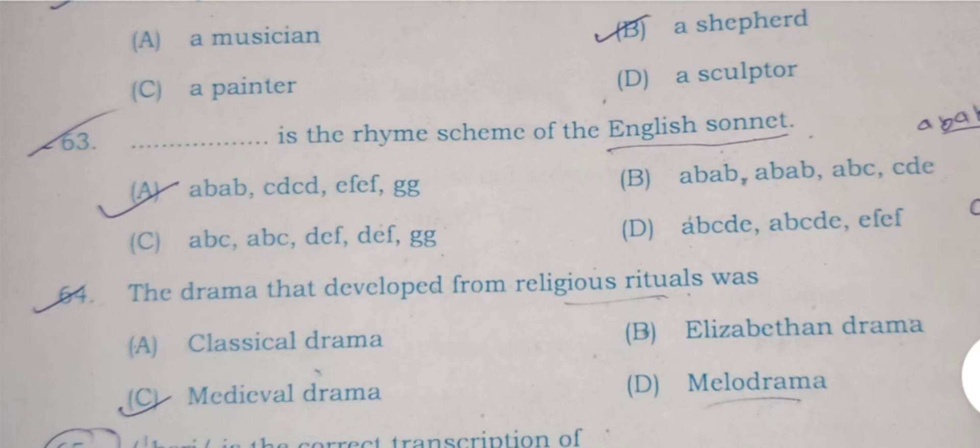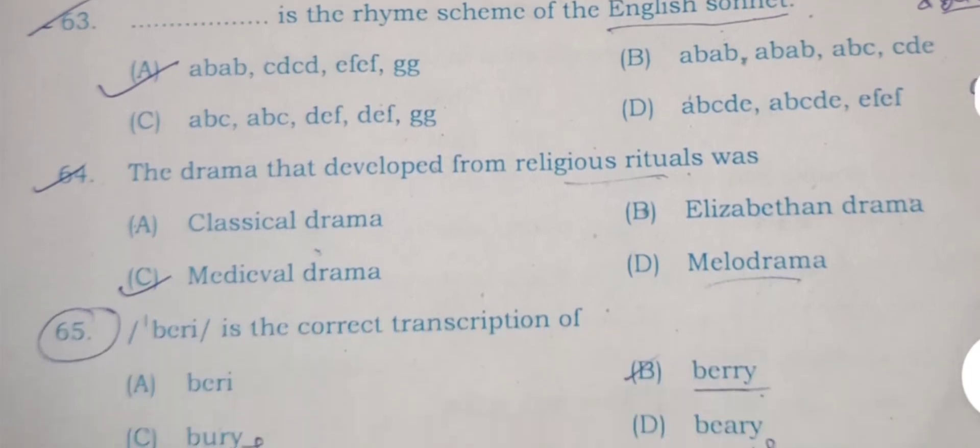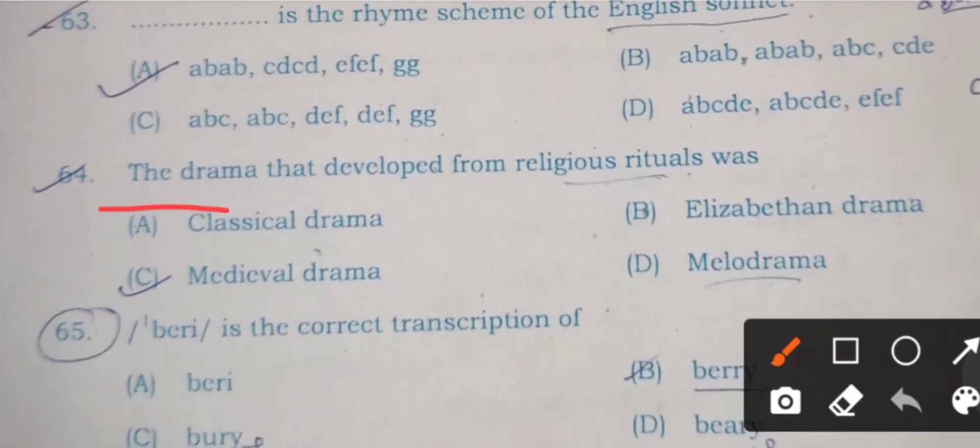Question number 64: The drama that developed from religious rituals was A) classical drama, B) Elizabethan drama, C) medieval drama, and D) melodrama. Here English drama has religious origin. It dwelt from mysteries and miracle plays. Here C is the correct answer.